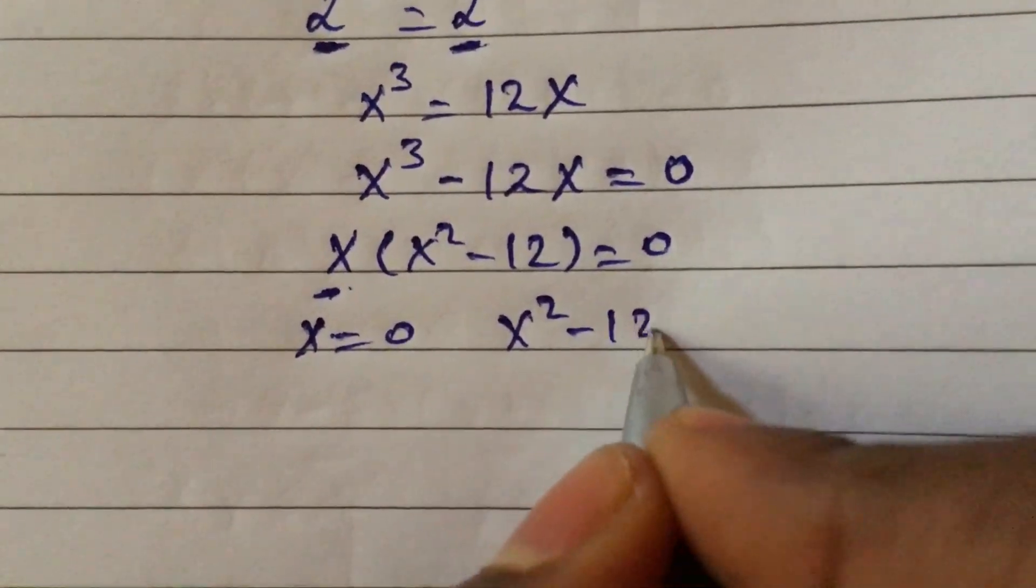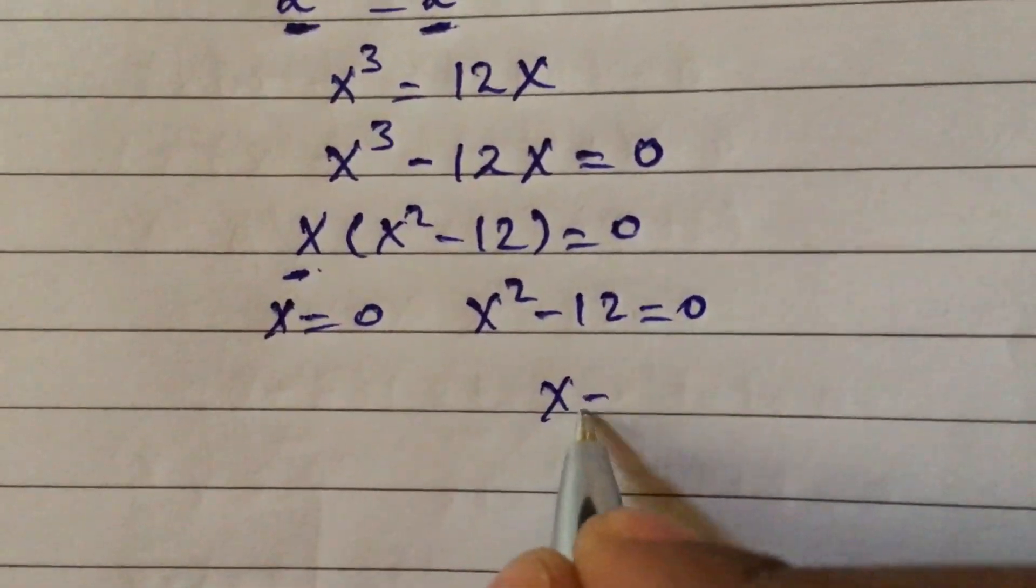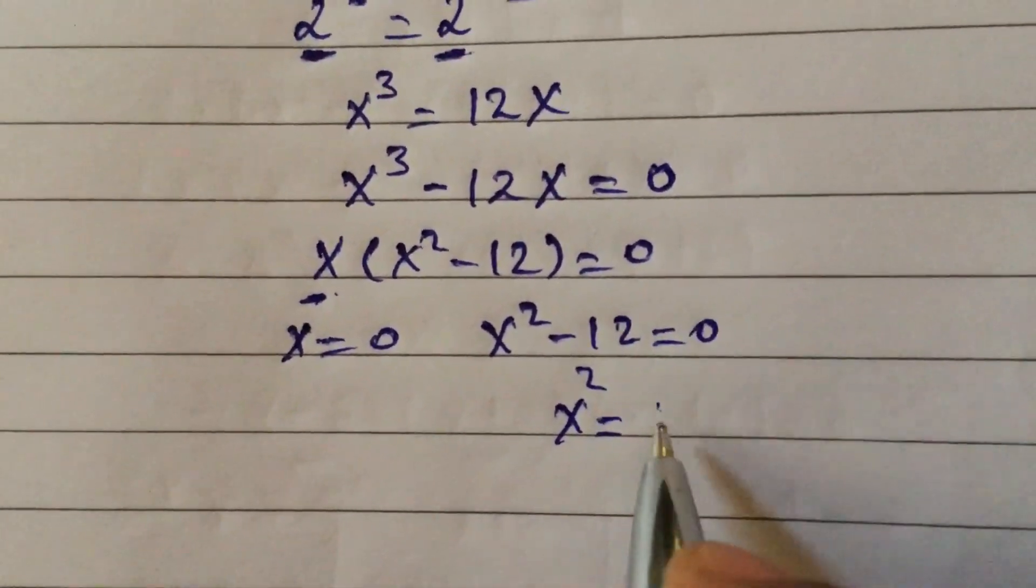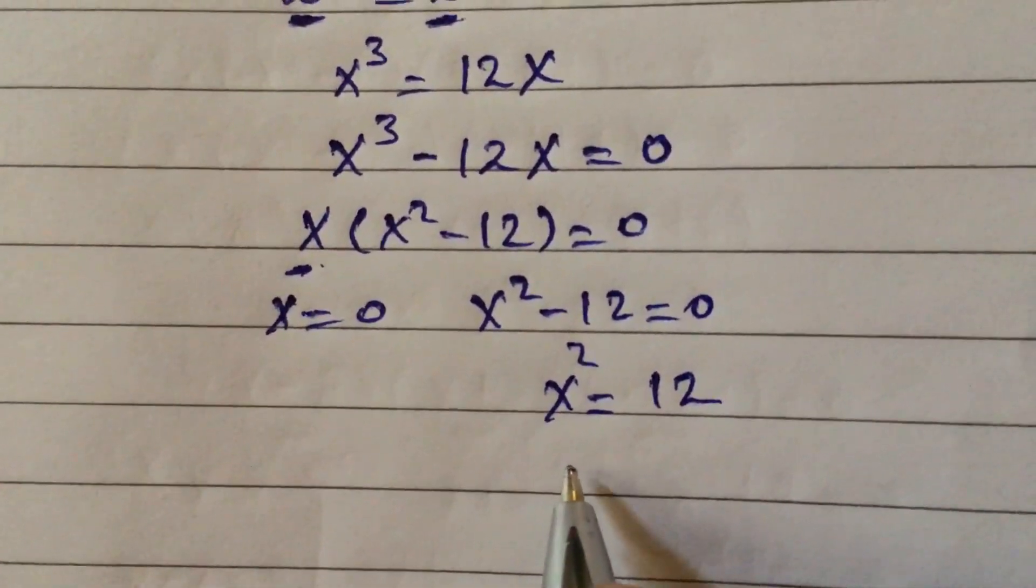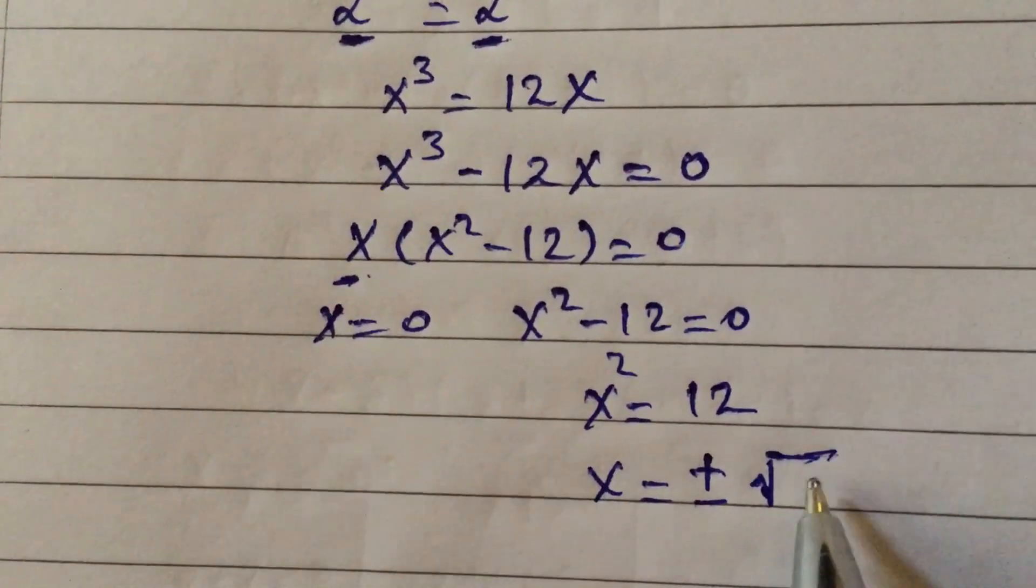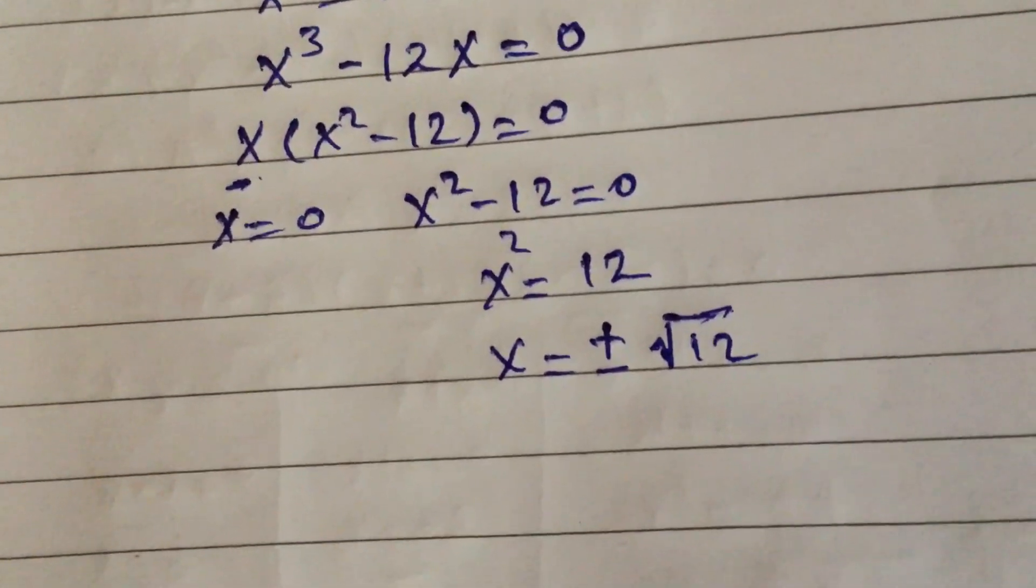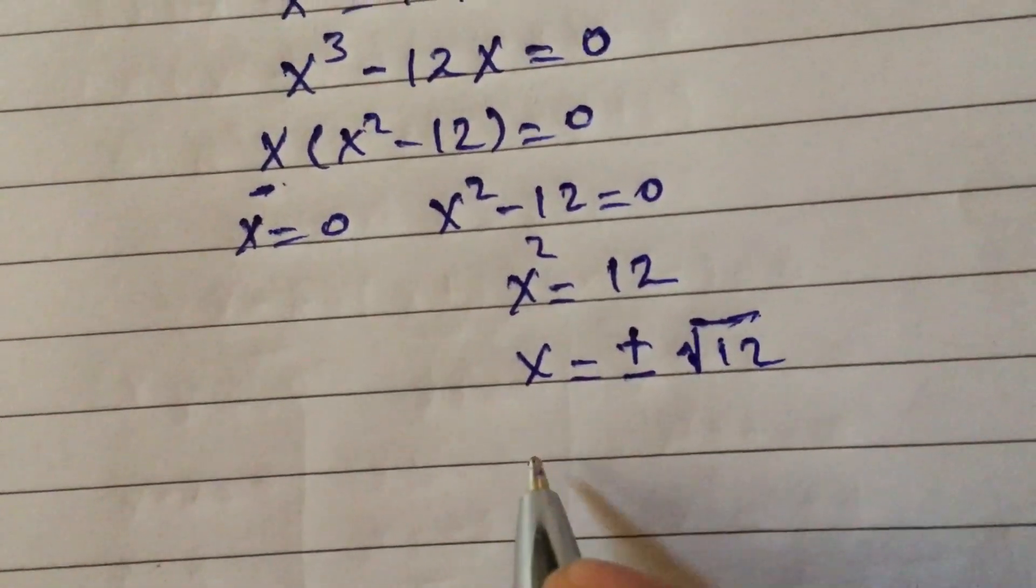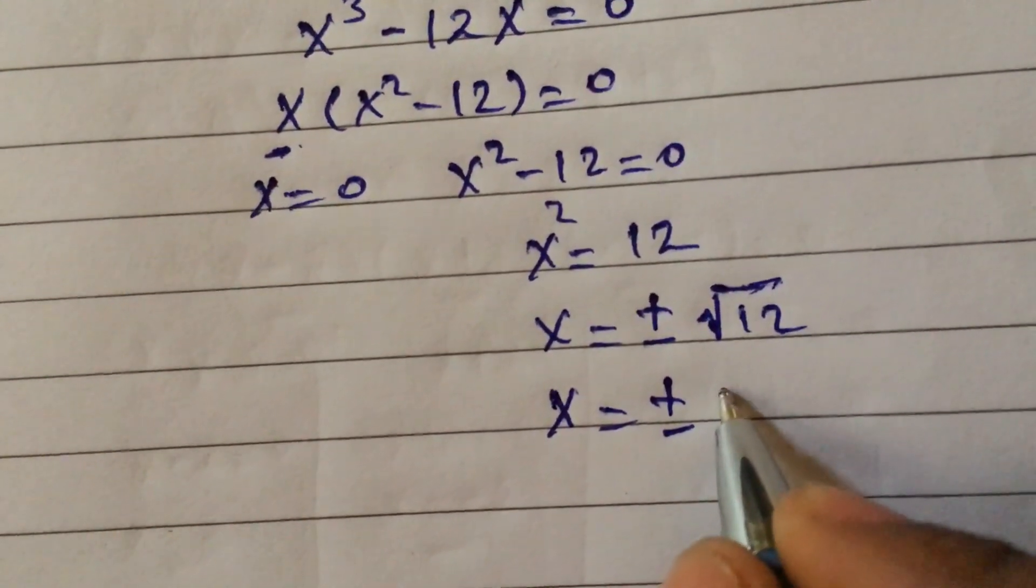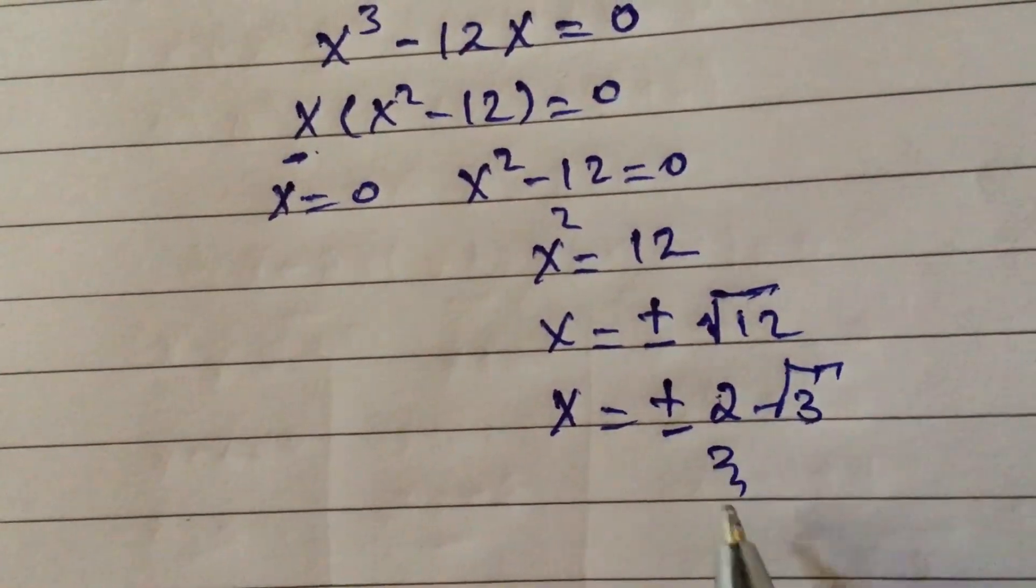X squared minus 12 equal to 0. X squared—we will take this number to the right side—positive 12. So x equal to plus or minus root 12, and x equal to plus or minus 2 root 3. Thank you.